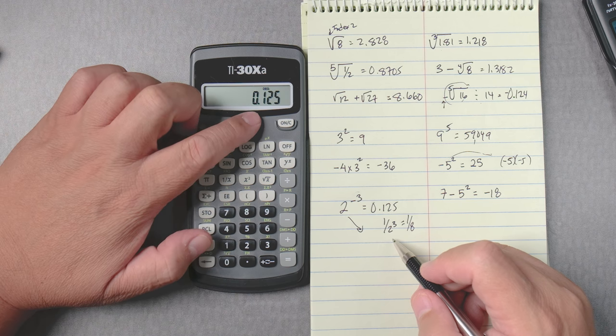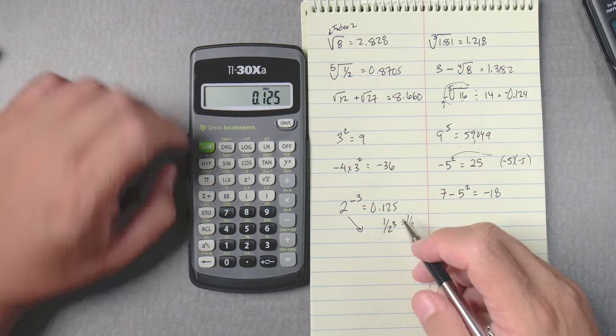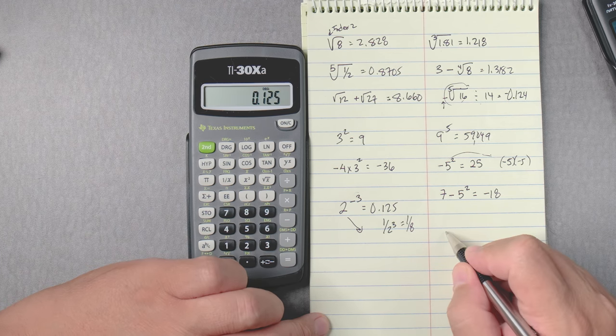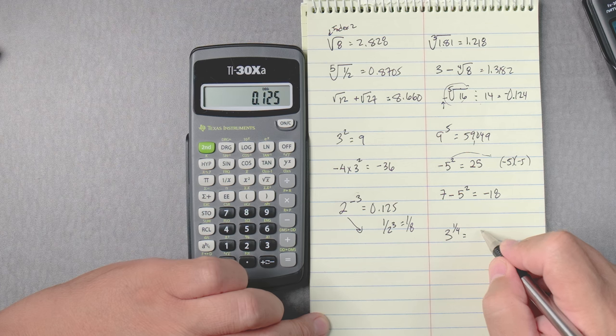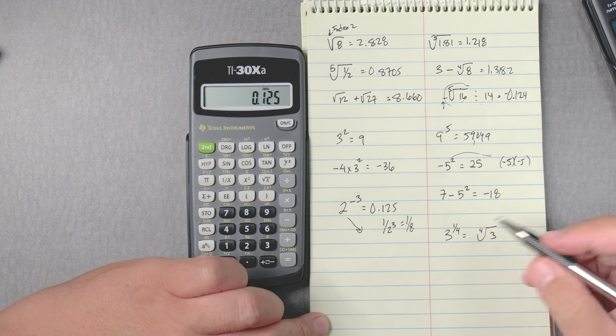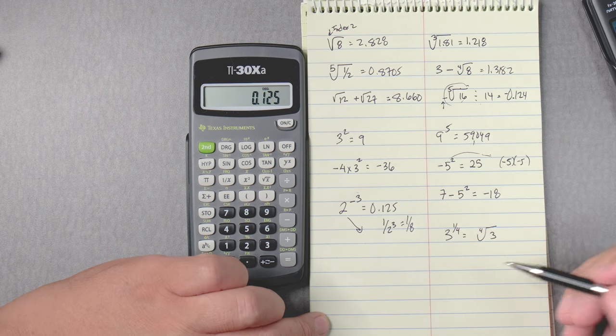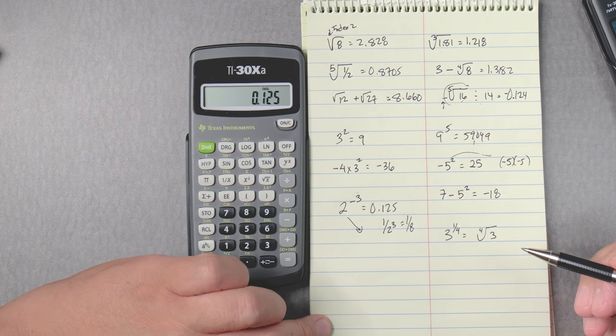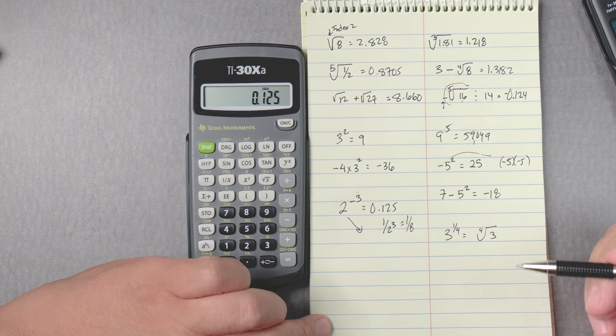Let's say you had something like 3 to the 1 fourth. That's the same as the fourth root of 3. This is one of the reasons why powers and roots are together. Things that have fractions here are really roots.